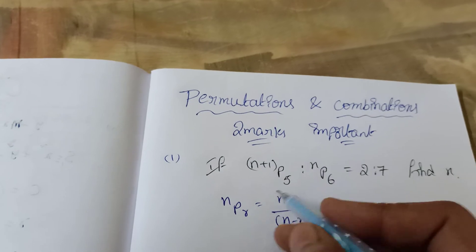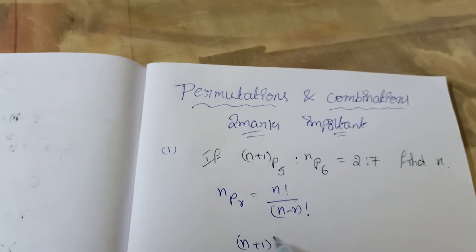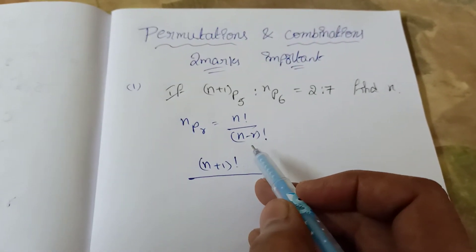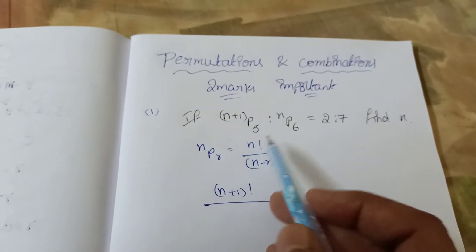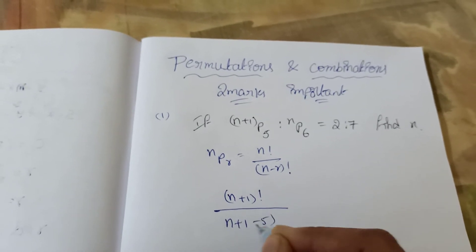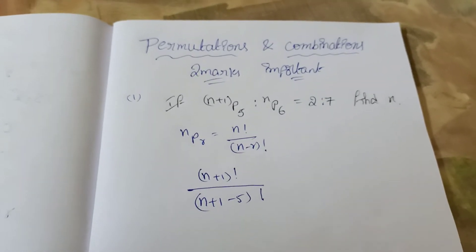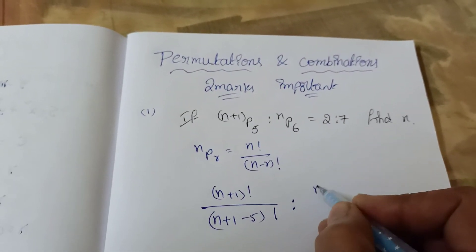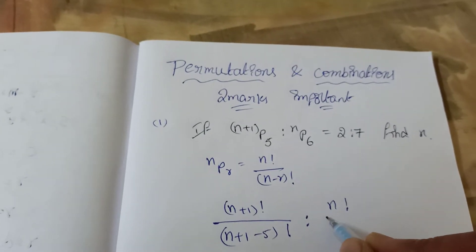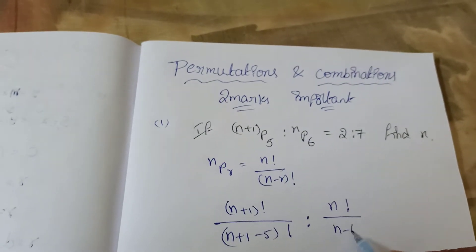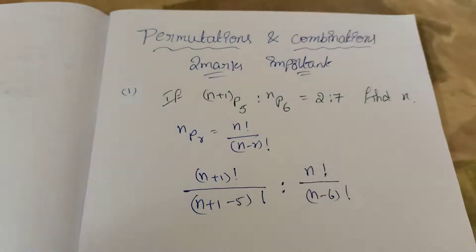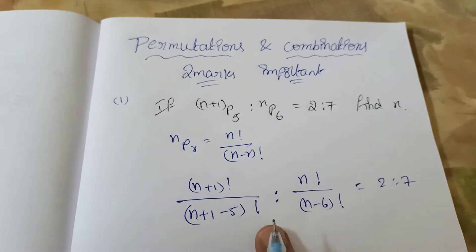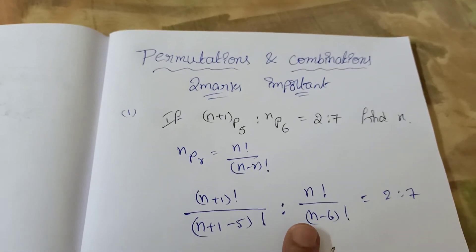Writing (n+1) factorial divided by (n minus 4) factorial. Next, nP6 means n factorial divided by (n minus 6) factorial, equal to the given ratio 2 to 7. Since it is a ratio, we write each as a fraction and take the reciprocal accordingly.